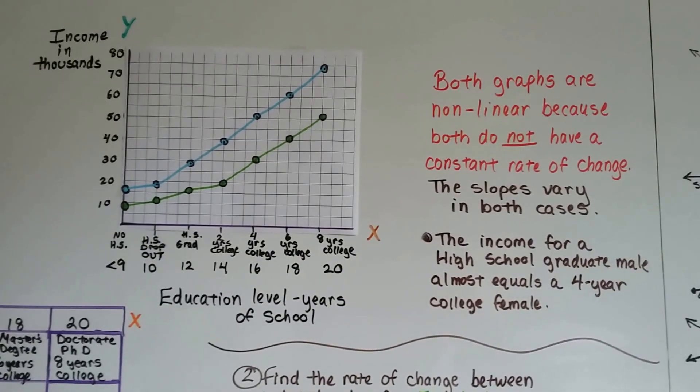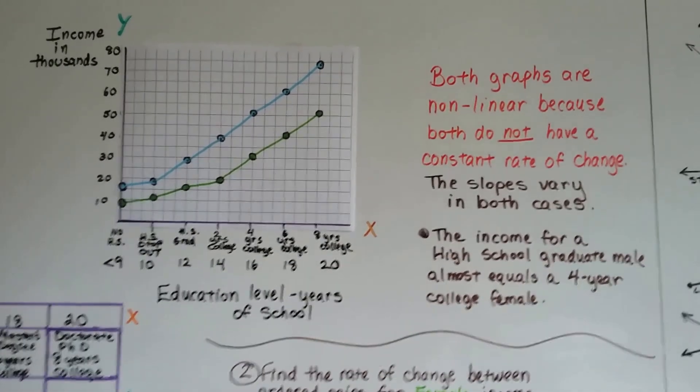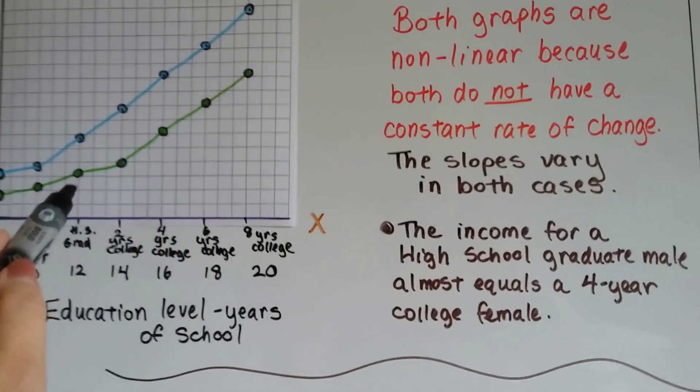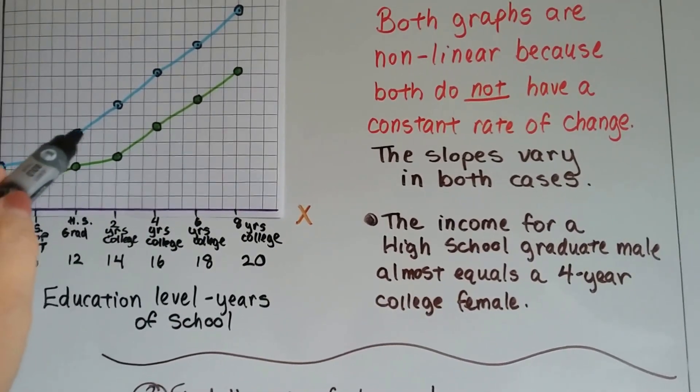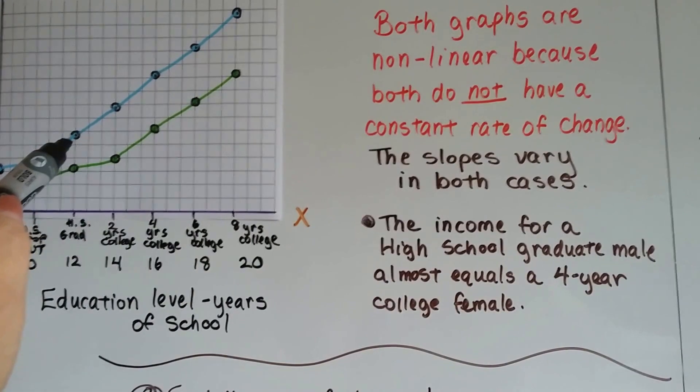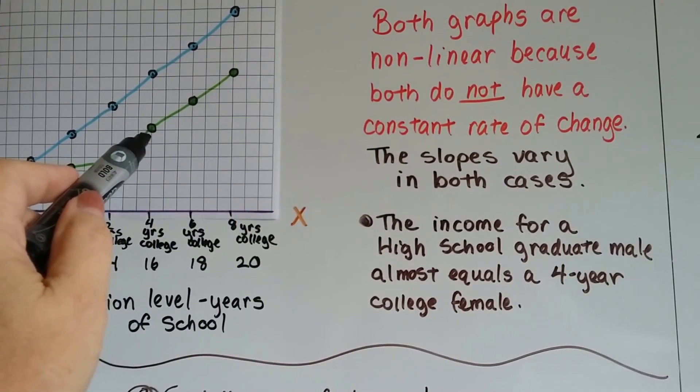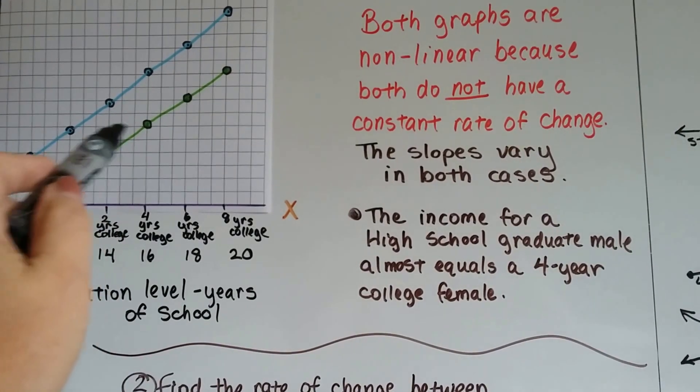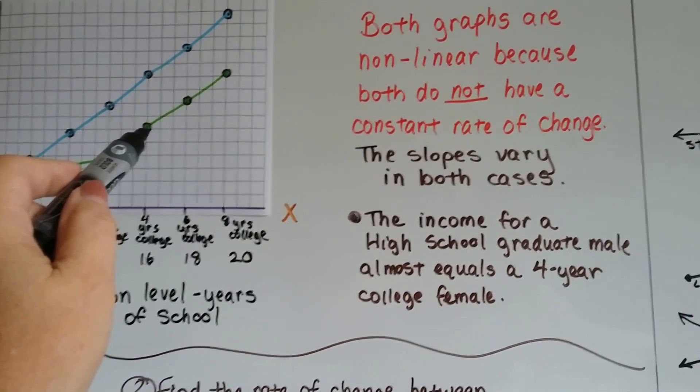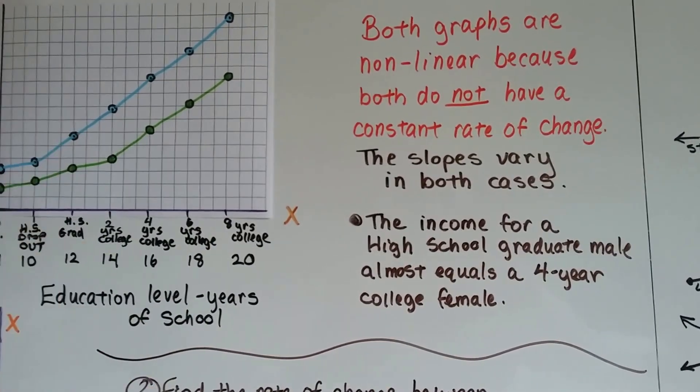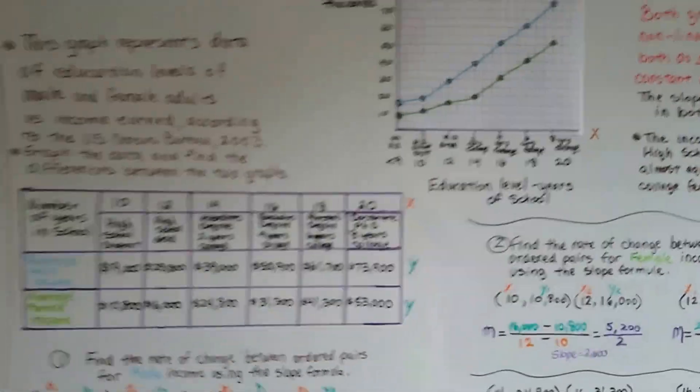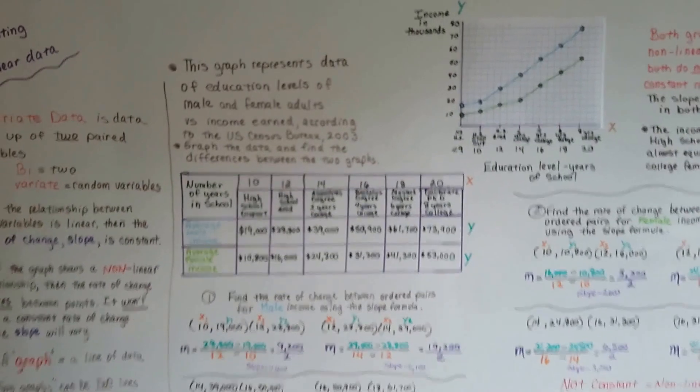The slopes vary in both cases. The income, did you notice this? The income for a high school graduate male is almost equal to a four-year college degree female. She would have a bachelor's degree from college and be making almost the same as a high school degree male.